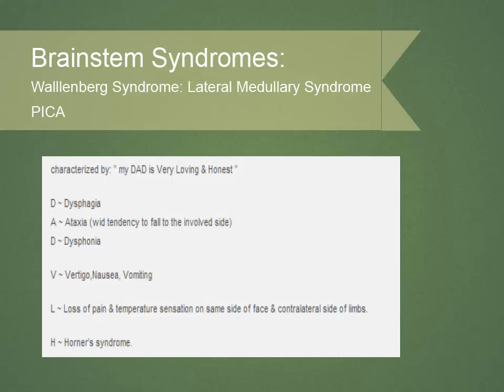In the mnemonic, DAD stands for dysphagia, ataxia, and dysphonia; V is vertigo and vomiting; L is loss of pain and temperature sense on the ipsilateral face and contralateral side of the body, as well as the Horner syndrome. You would be able to localize this lesion based simply on the eighth nerve involvement, the trigeminothalamic involvement, and the contralateral spinothalamic involvement — providing good localization even without obtaining an MRI scan.